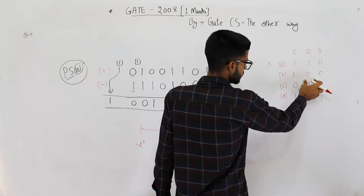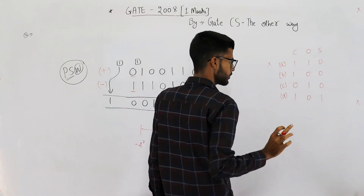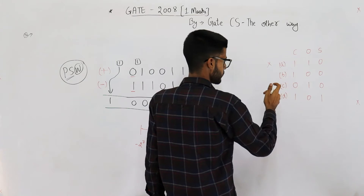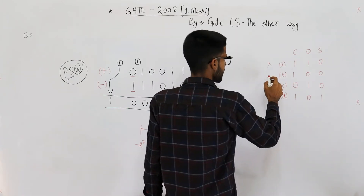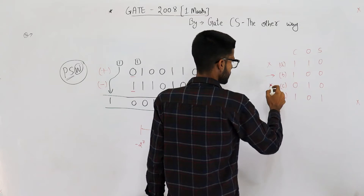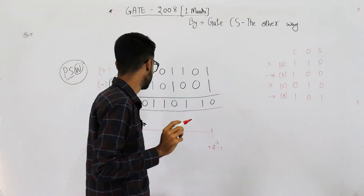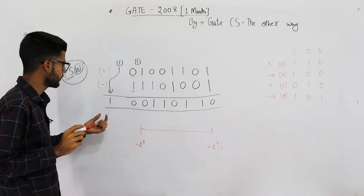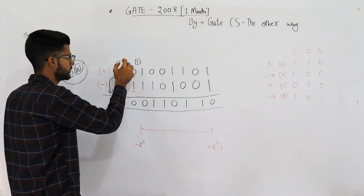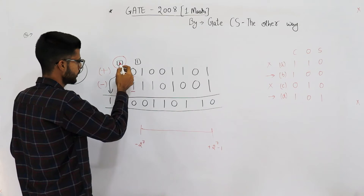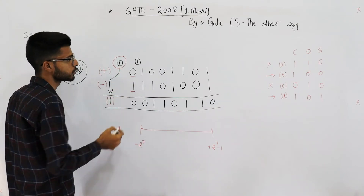That means you can never cause overflow. So option A says overflow is 1 — that's not possible. Option C is also not possible. Our answer can only be option B or option D. Now, did we generate a carry? Yes, we generated a carry out, so the carry flag has to be 1.